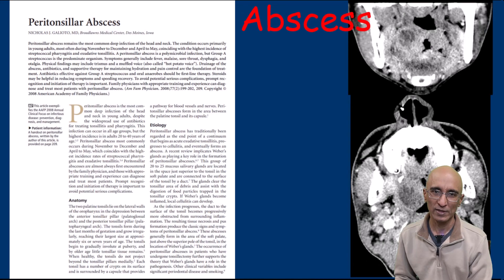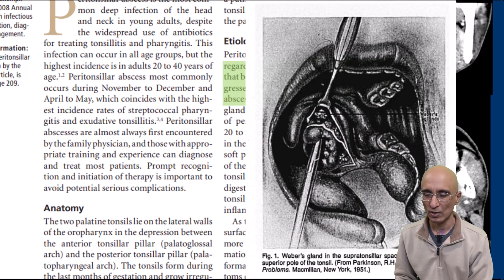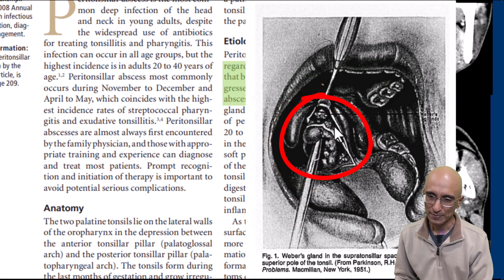This is a nice review article I found in the literature which goes through the pathophysiology of peritonsillar abscess. Up until recently I assumed peritonsillar abscess was a natural progression of acute exudative tonsillitis leading to cellulitis with peritonsillar abscess formation. Recently I came across a concept where they say peritonsillar abscess is actually inflammation of minor salivary glands in the peritonsillar region.